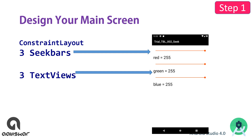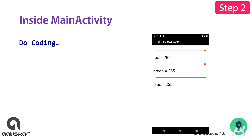Design three SeekBars — one for red, one for green, and one for blue. Note that by default the SeekBar's maximum value is 100; you need to change it to 255, because the RGB range is 0 to 255, meaning 256 total color levels. If you are familiar with Color.rgb in Java, you know each channel goes from 0 to 255. Design three SeekBars and three TextViews, then code inside MainActivity.